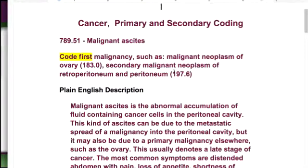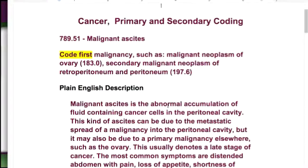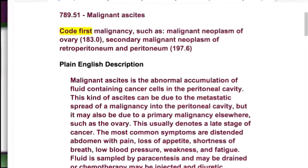Looking at code 789.51, it codes the malignancy — the neoplasm — first, and it gives you these suggestions. This tells you that when you apply that guideline, you always want to pay attention to these guidelines. This is how the AAPC forms the test — they want to know if you can follow these rules and guidelines. So if you see a 'code first' instruction, there better be a code in front of 789.51, or you're going to code it wrong.